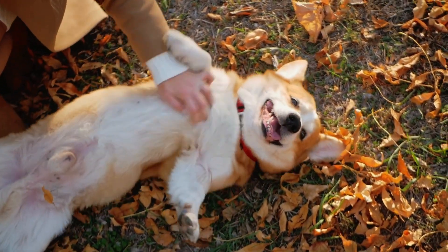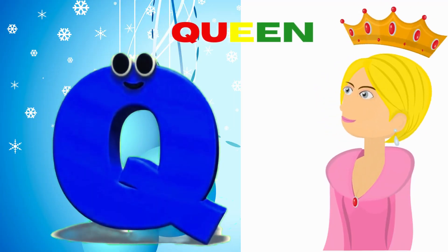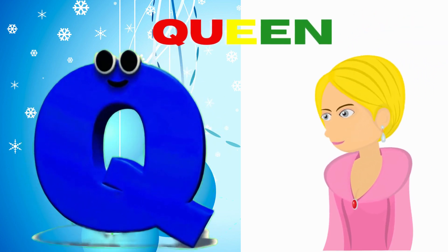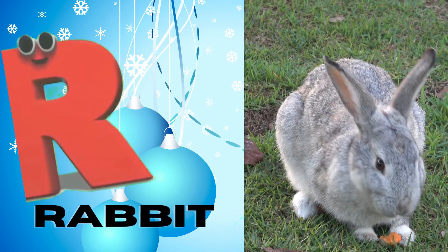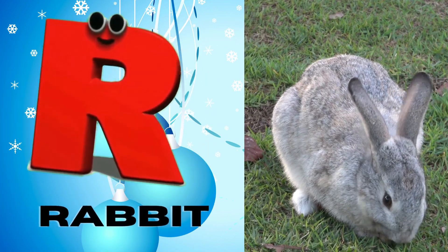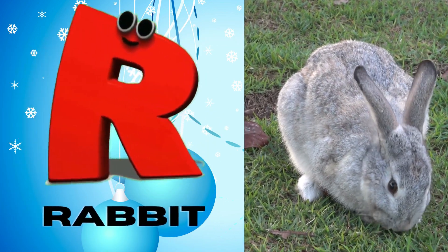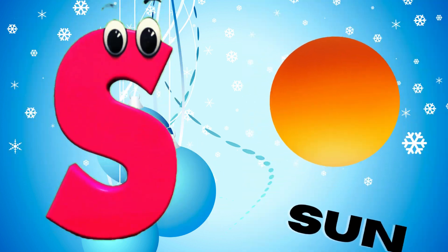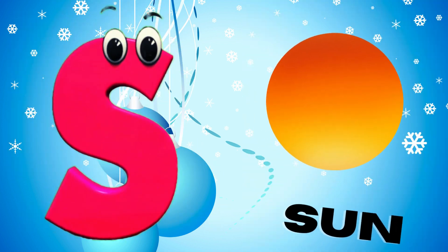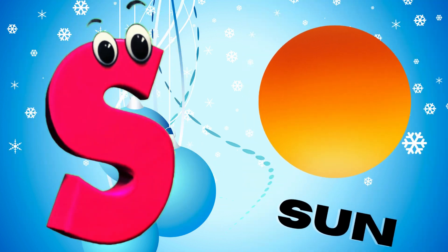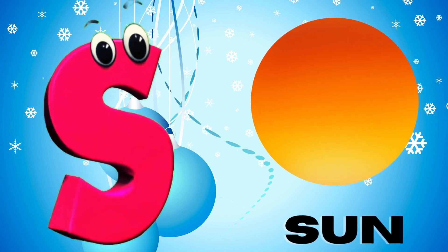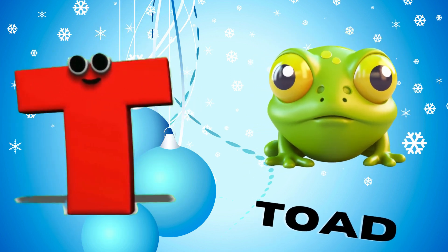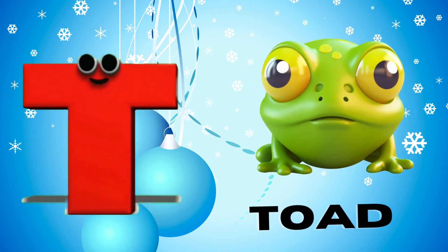Q is for queen, qu-qu-queen. R is for rabbit, r-r-rabbit. S is for sun, s-s-sun. T is for toad, t-t-toad.